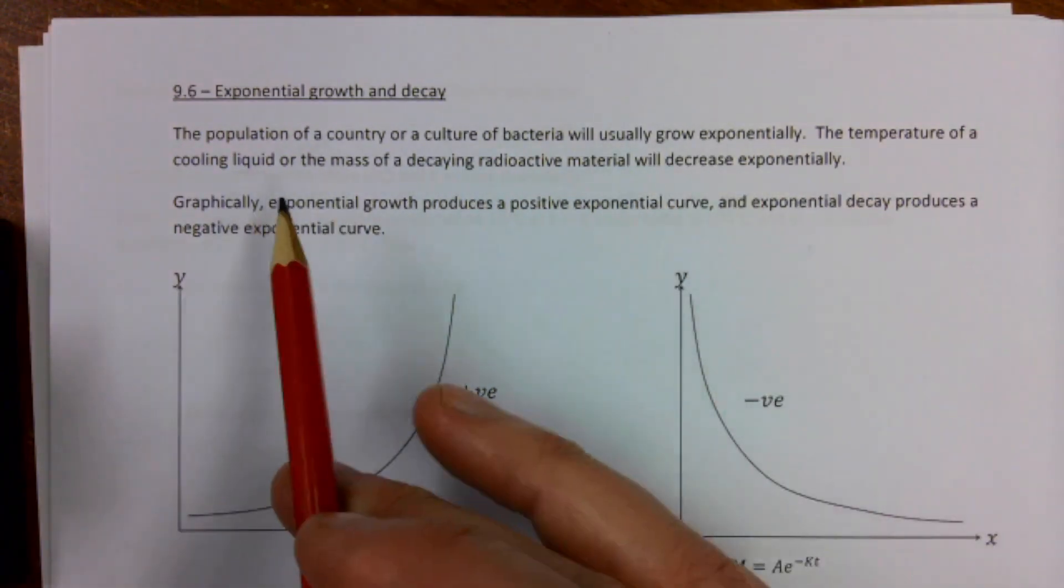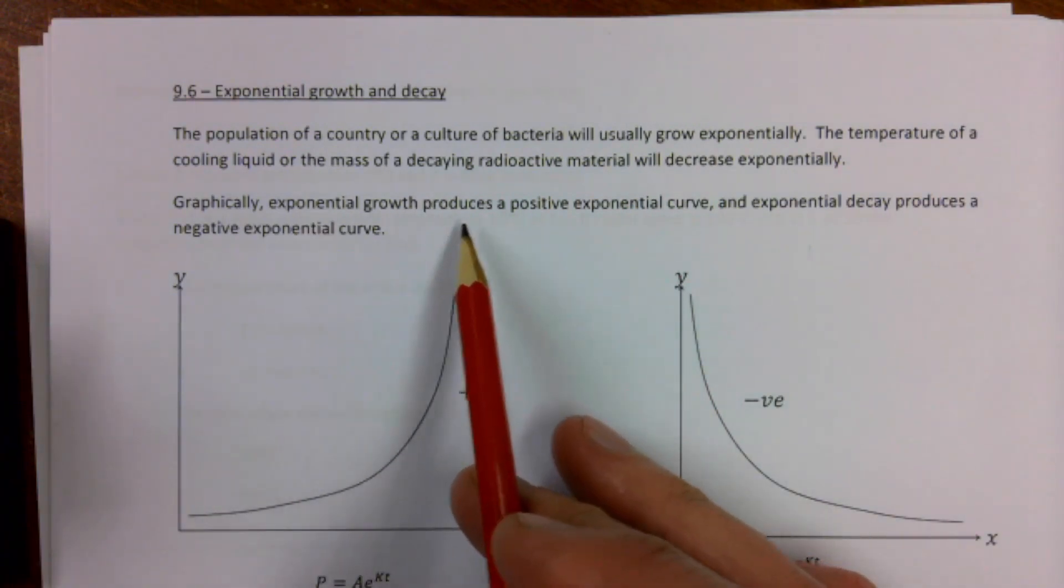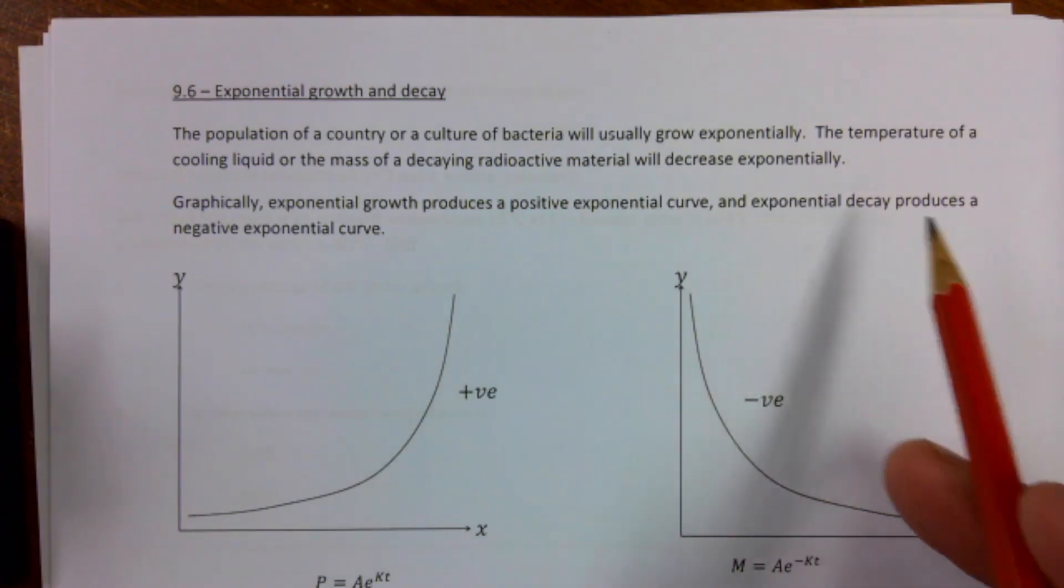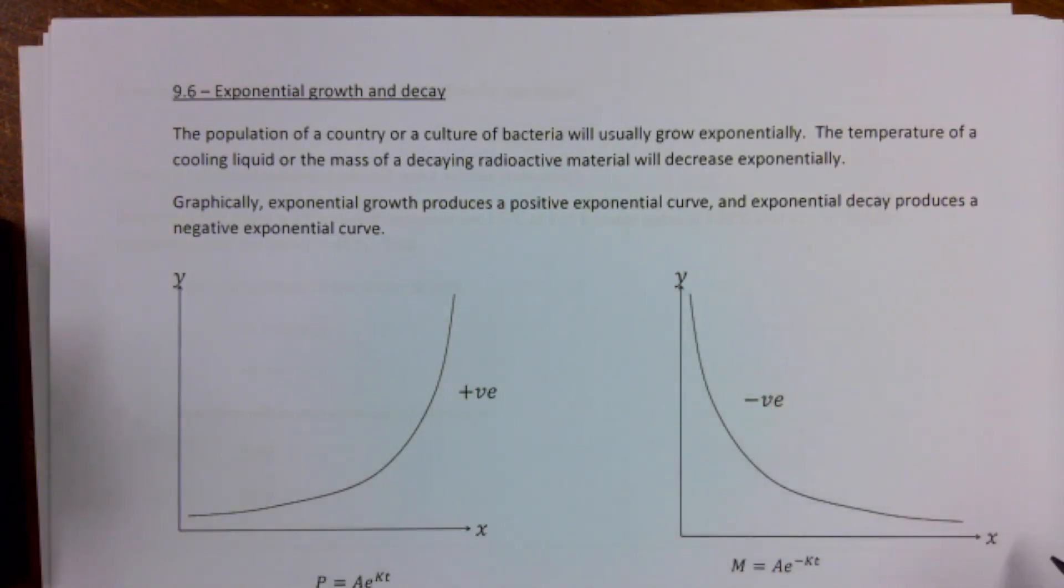So that would be this one instead. Graphically, exponential growth produces a positive exponential curve, and exponential decay produces a negative exponential curve.